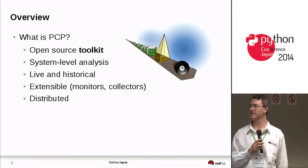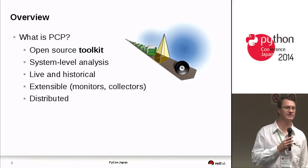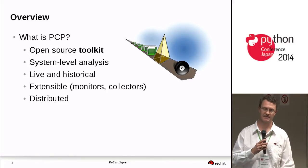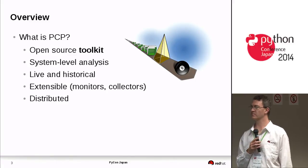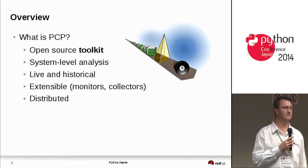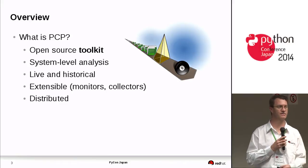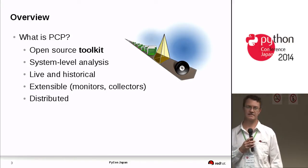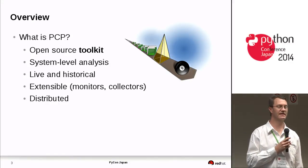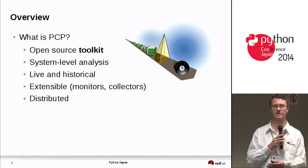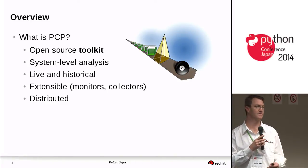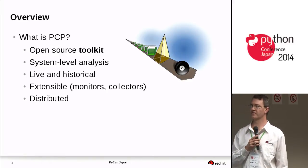A quick overview: what is PCP? First and foremost, it's a toolkit for doing performance analysis at the system level. Obviously it's open source, otherwise Red Hat wouldn't be behind it. It's primarily C code with some C++ code and several interfaces to libraries. There are a few daemons that you would run on a system under analysis, and a whole suite of analysis tools.